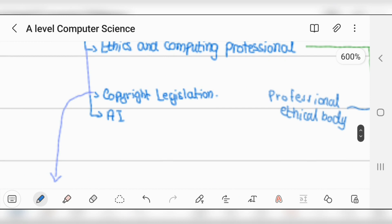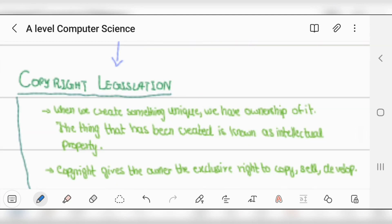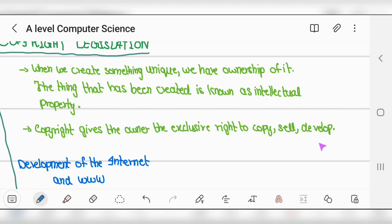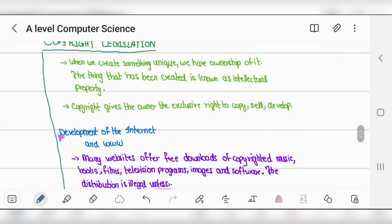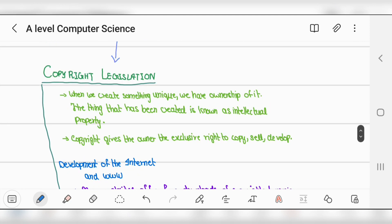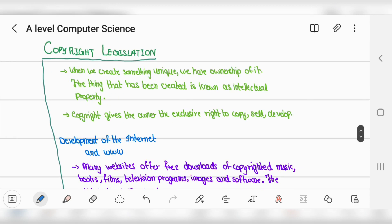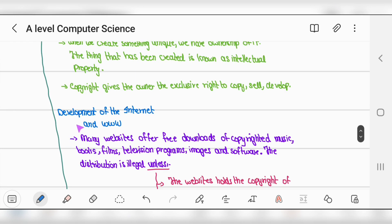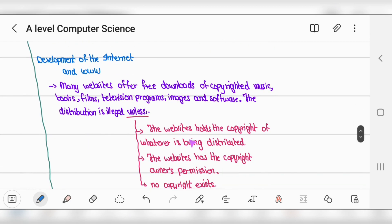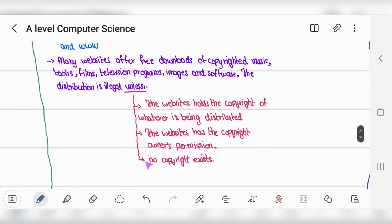Next is copyright legislation. When we create something unique, like making a video, there should be copyright because it's my material. Whatever we create, we have ownership - this is intellectual property. Copyright gives the owner exclusive rights to copy, sell, and develop. Why do we use copyright? It began after development of the internet and World Wide Web. Many websites offer free downloads of copyrighted music, books, films, TV programs, images, and software.